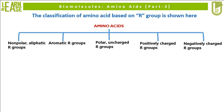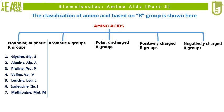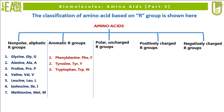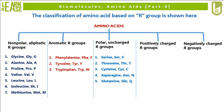Glycine, alanine, proline, valine, leucine, isoleucine, and methionine are categorized under amino acids with nonpolar aliphatic R groups. Phenylalanine, tyrosine, and tryptophan are categorized under amino acids with aromatic R groups.